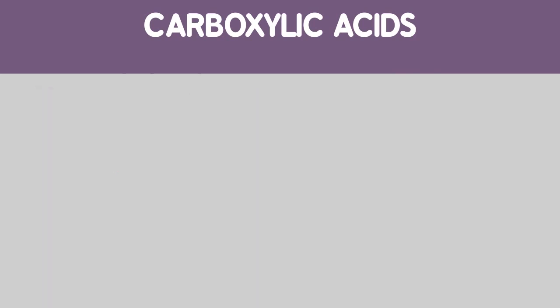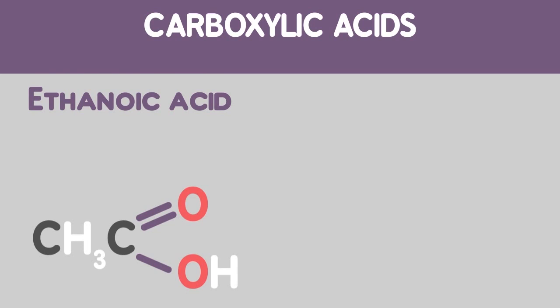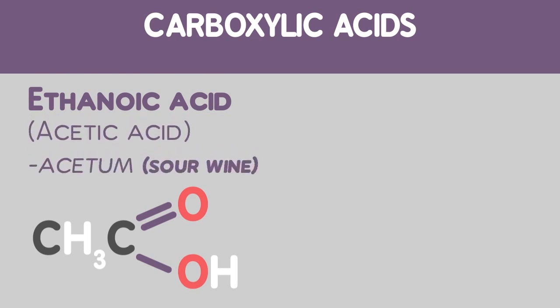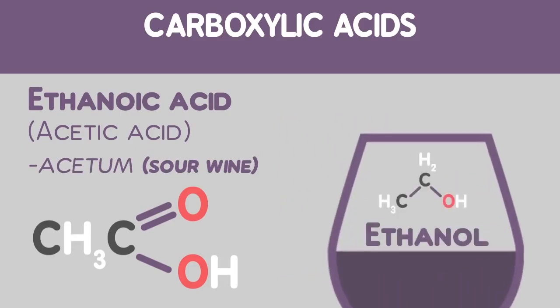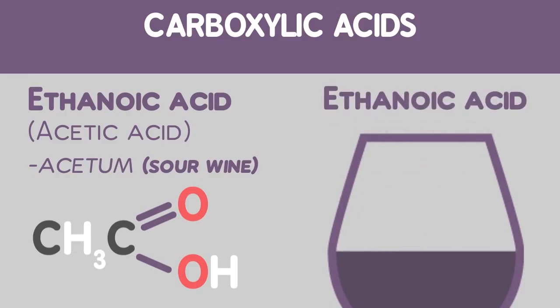Secondly, ethanoic acid. Ethanoic acid is commonly called acetic acid, from the Latin acetum, meaning sour wine. This is because wine, which is a solution of ethanol, is oxidised in the air to ethanoic acid. Vinegar is a dilute solution of ethanoic, acetic acid.